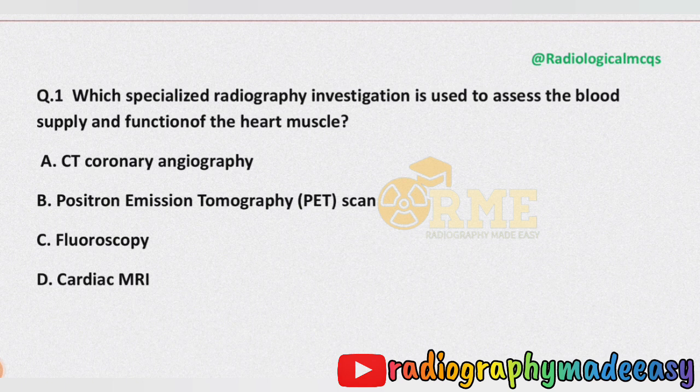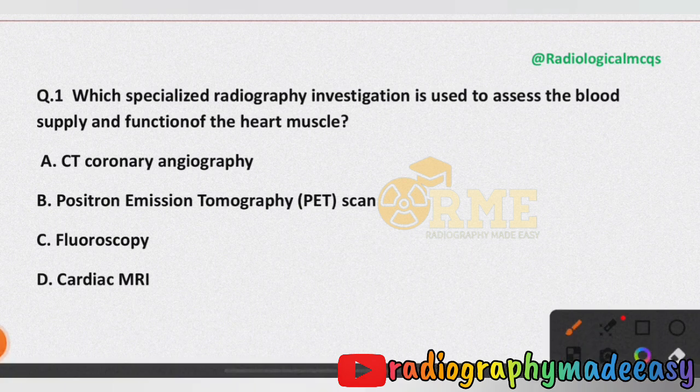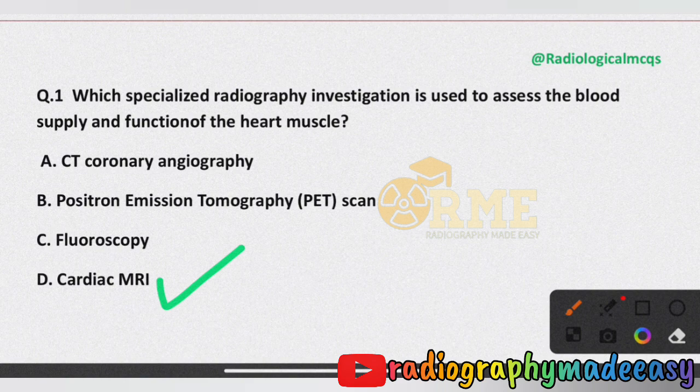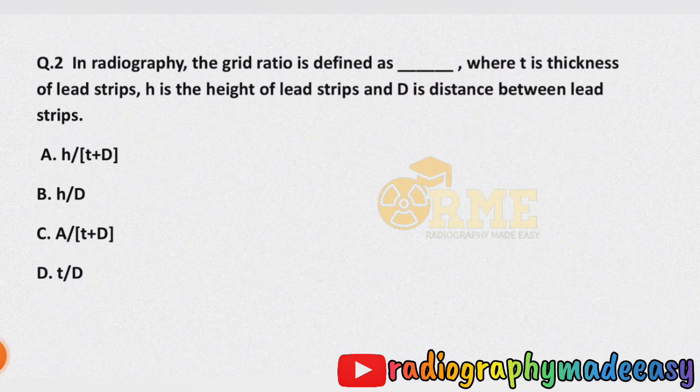Today's question is: which specialized radiographic investigation is used to assess the blood supply and function of the heart muscle? Options are CT coronary angiography, positron emission tomography PET scan, fluoroscopy, and option D cardiac MRI. The correct answer is option D, that is cardiac MRI.